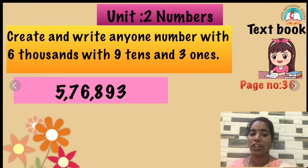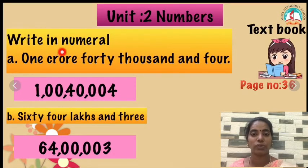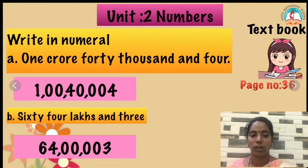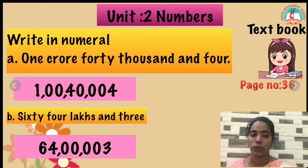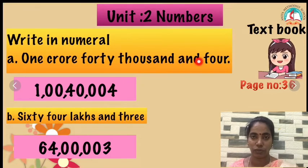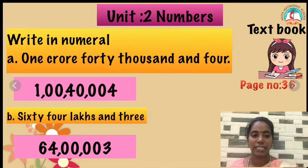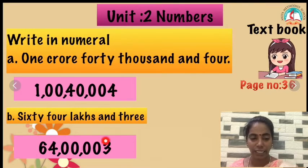The next one: you are going to write in numeral. What is meant by numeral? You have to write in numbers. Here, words are given — 1,40,004. You have to write that in numeral form like this. The second one: 64,003. So you have to write in the numeral.